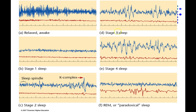Stages 3 and 4 sleep are together known as slow wave sleep, and some authorities just combine them into a single stage. The only difference between stage 3 and 4 is the amount of time the brain is producing these very large, very slow waves called delta waves. If it's more than half the time, you're in stage 4; less than half, you're in stage 3.